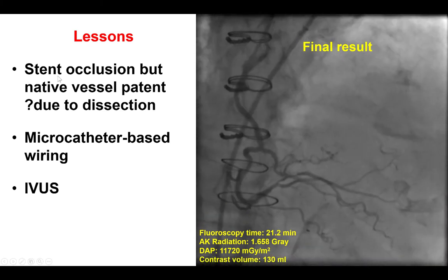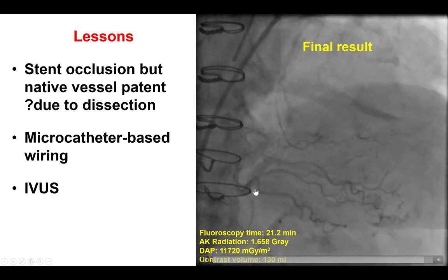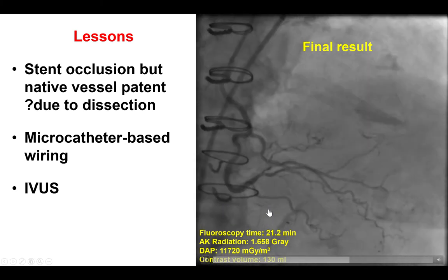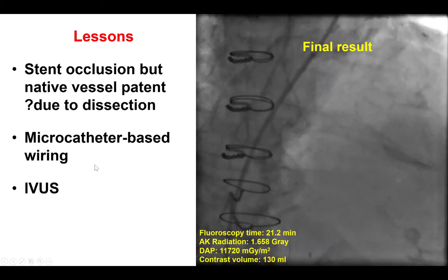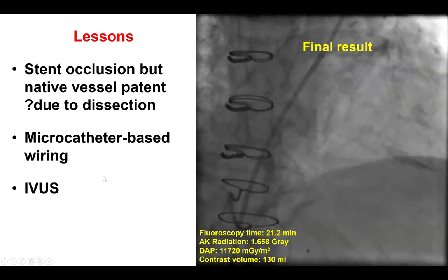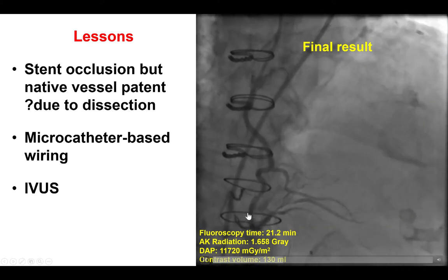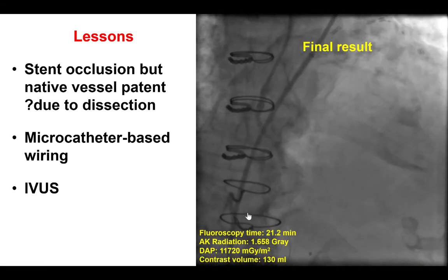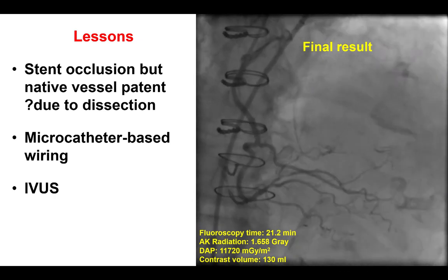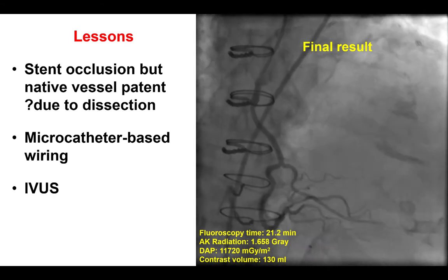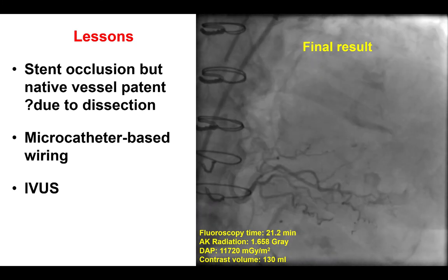This is a very unusual case showing stent occlusion but re-canalization of the native vessel, presumably because when the stent was initially placed it was placed at the dissection plane and subsequently the vessel spontaneously re-canalized. It also demonstrates the importance of using a microcatheter for wiring through tortuosity or other challenging lesions, as the microcatheter provides better support and allows reshaping of the wire tip. Finally, it shows the usefulness of intravascular ultrasound to understand the anatomy, confirm that the previously occluded stent had a more proximal patent segment, and demonstrate that the vessel distally was in the true lumen and therefore the previously placed stent must have been in the subintimal space.